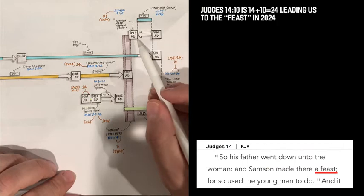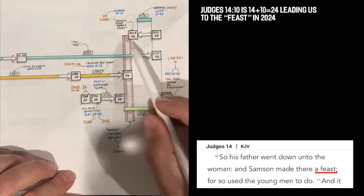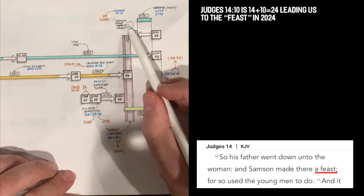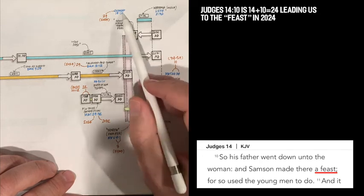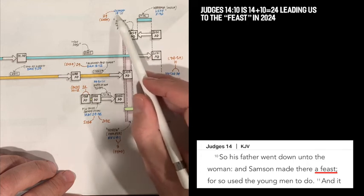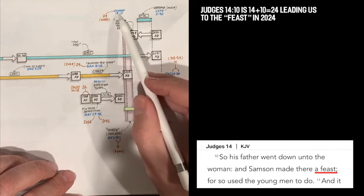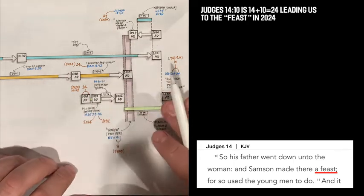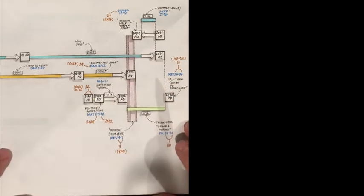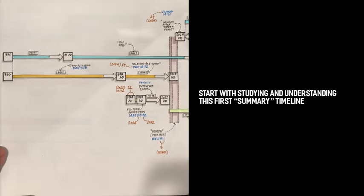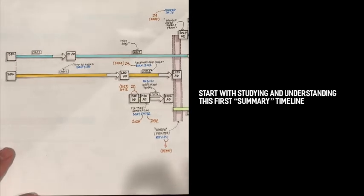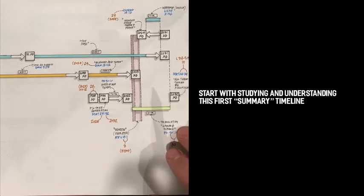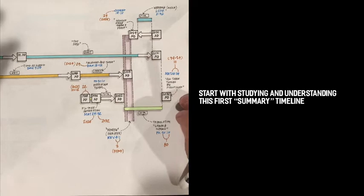And then lastly, in 24 being the edge of the window or open door, we also have Samson who made there a feast for his Gentile bride. And that's Judges 14:10. And we already know from the previous videos that 14, 10 is our 24 pointing to 2024. So this is the overall diagram. I'm going to slide it over one more time. And then I'll post it in the community page so you guys can download it and copy-paste and study that. That's kind of your overall outline. So now let's look at the second chart.